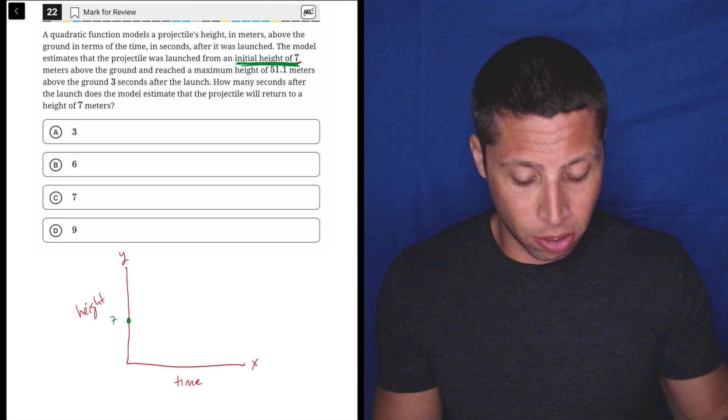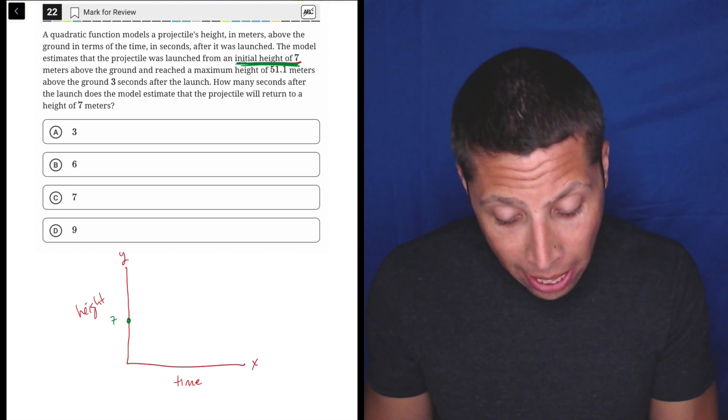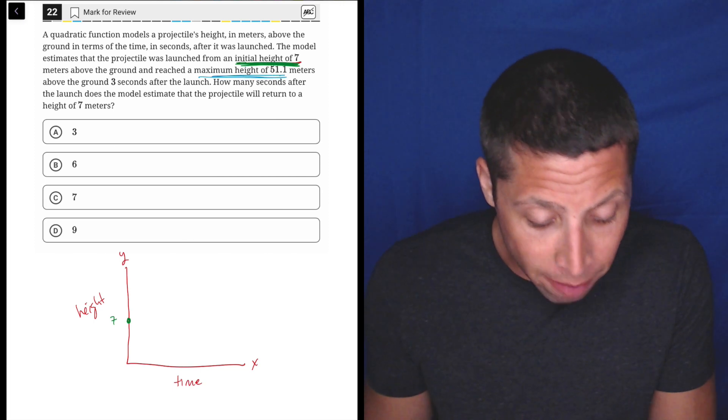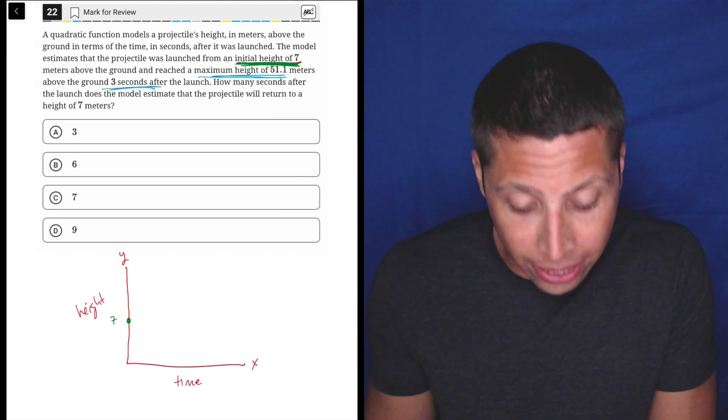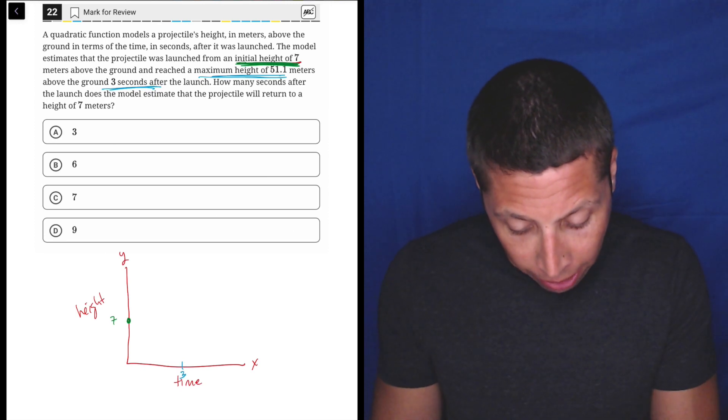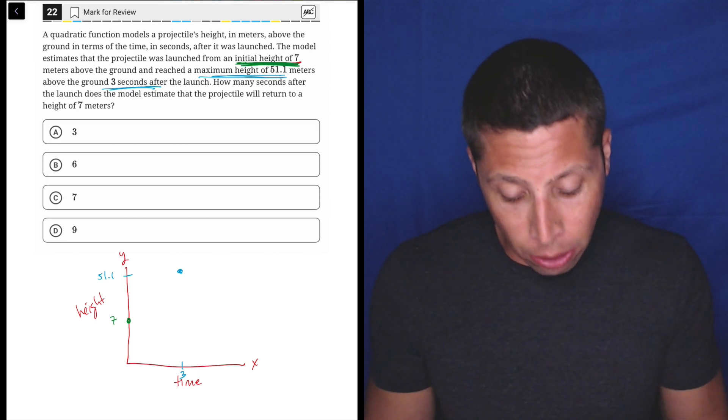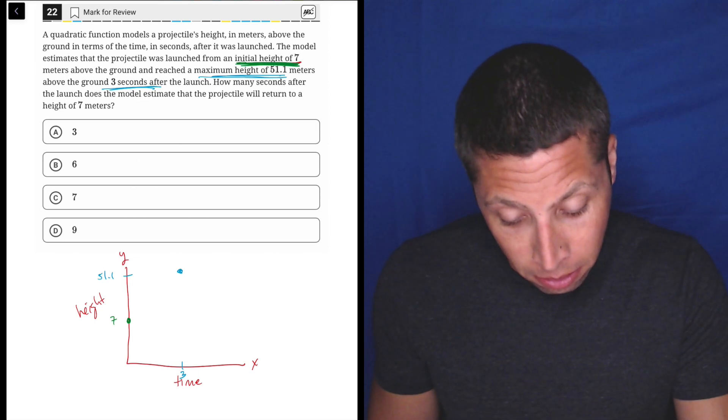So that's going to appear right there. Moving on though, and it reached a maximum height of 51.1 meters three seconds after it was launched. So let's just put three kind of here and 51.1 up here. And so there's a point up here. Now, if that's the maximum, right, it goes up to that point but then it goes down.